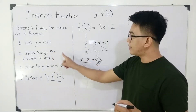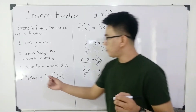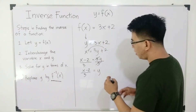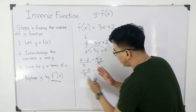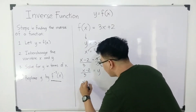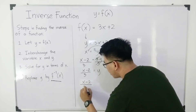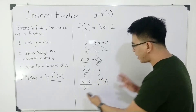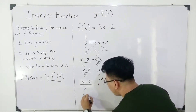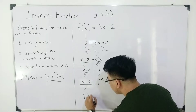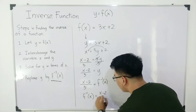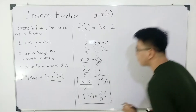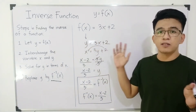We are done with step number 1, step number 2, and step number 3. Lastly, replace y by f inverse of x. So we have f inverse of x is equal to x minus 2 over 3. This is the inverse of f of x equals 3x plus 2.